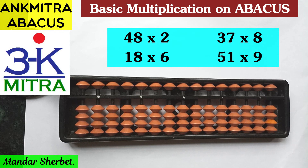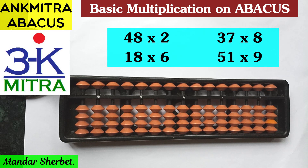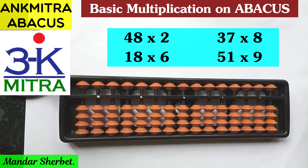Another important point everyone should know: while reciting tables of one-digit numbers, for example 3 multiplied by 8 is 24 — that's already a two-digit number — but 3 multiplied by 2 is 6, which is a one-digit number. In situations like this, when we get a one-digit answer for any one-digit number table, we have to make it a two-digit number. That is, 3 multiplied by 2 should be read as 06 and not just 6. This is very important for getting a correct answer during basic multiplication on abacus.